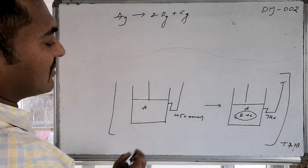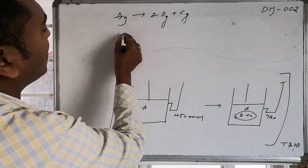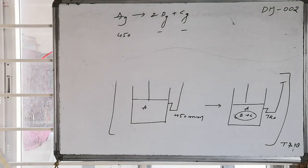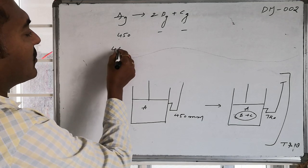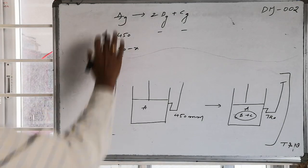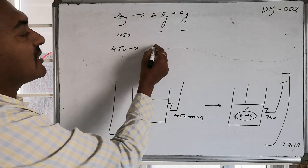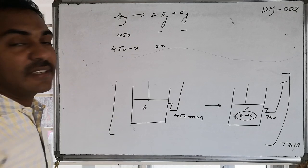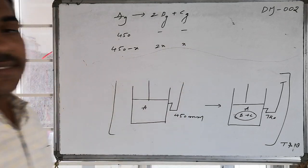Let us consider its concentration in the beginning is 450, then there is no B as well as no C. Some amount of 450 underwent decomposition, I am claiming it as x, one molecule. Whereas here 2x is generated, two molecules are generated in place, this will be 2x and this will be x.